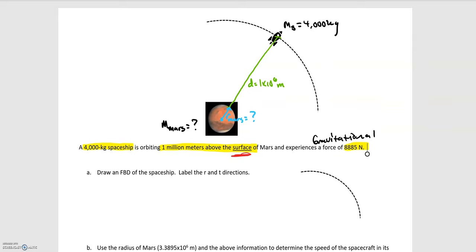The other piece of information we're told is that the gravitational force is equal to 8,885 Newtons, pointing inwards towards Mars. Mars is pulling the spaceship in, which is what keeps it in orbit. We'll label that F sub g equal to 8,885 Newtons. With everything labeled, we can move on to the next step: drawing a free body diagram for the spaceship.